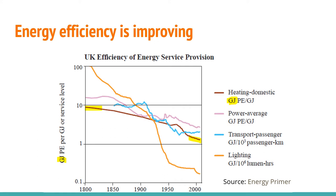The transport system, shown in blue, starts with the railway in modern industry. At the beginning, energy use did not go down because trains got faster, which offset efficiency gains in the steam engine. But then there was a rapid improvement period. The energy required per thousand passenger-kilometers has gone down by about a factor of eight as well.